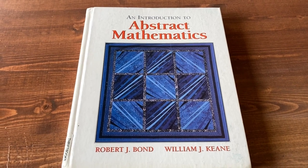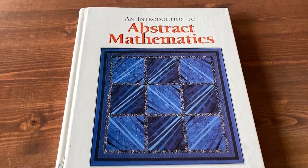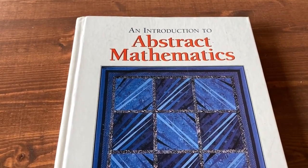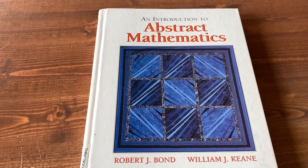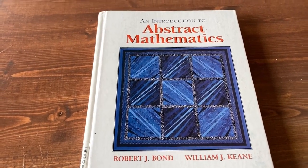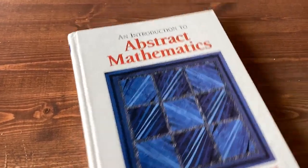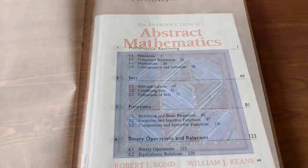Hi everyone, in this video I want to go over a book on writing proofs. The book is called An Introduction to Abstract Mathematics and it was written by Bond and Keane. This is a pretty good book, let's take a look inside it.